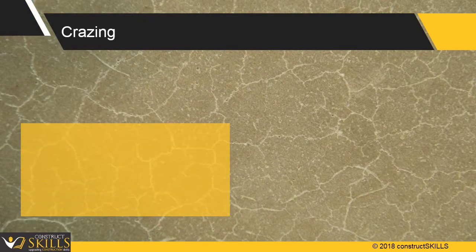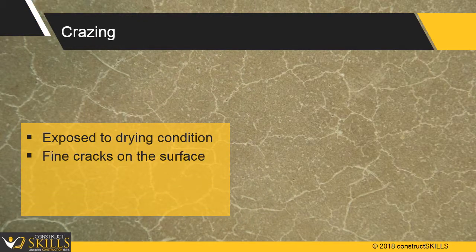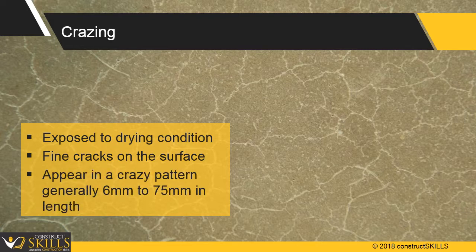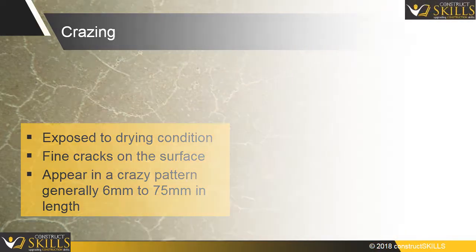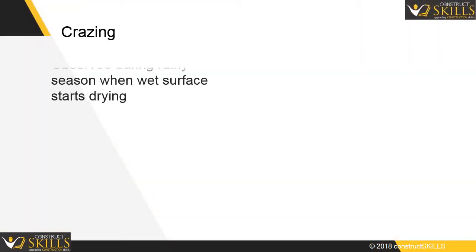When the plastered surface is exposed to dry conditions, fine cracks appear on the surface of the plaster in a crazy pattern having a length of 6 mm to 75 mm. This is called crazing. It is generally observed during the rainy season when a wet surface starts to dry.